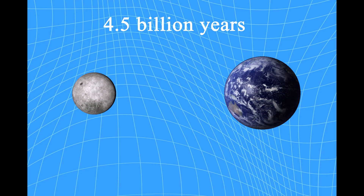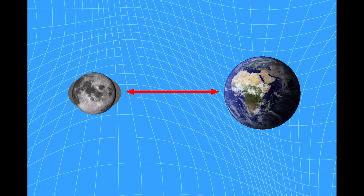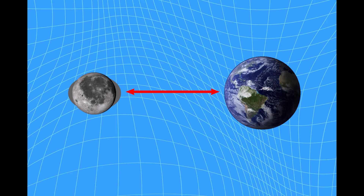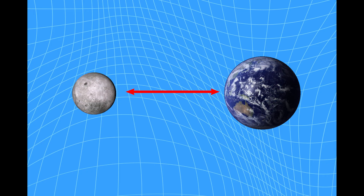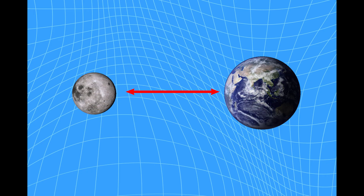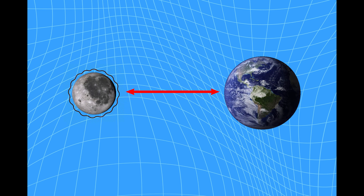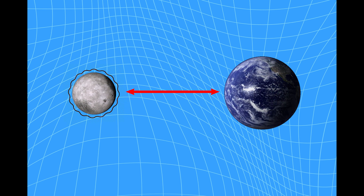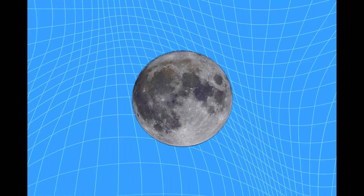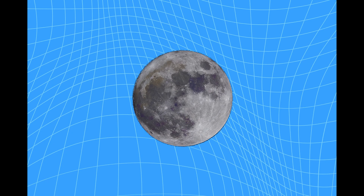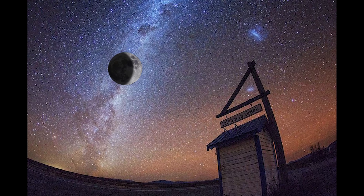When the moon formed some 4.5 billion years ago, it was spinning much more rapidly than today. Earth's gravity caused a rocky tidal bulge in the moon, making it lemon-shaped rather than a neat sphere, with a pinched end facing our planet. Back in the moon's fast-spinning early history, that bulge kept shifting across the surface — much like our ocean tides — effectively acting as a brake, gradually slowing the moon's spin until it fell into equilibrium with its orbital period, locking the same hemisphere permanently facing us.